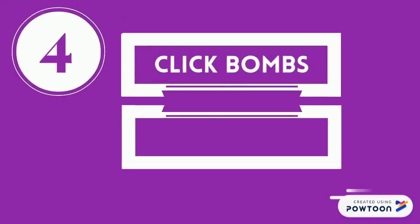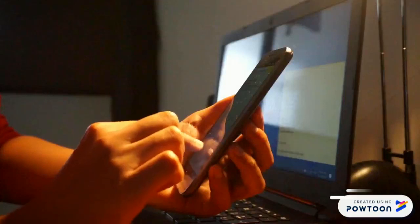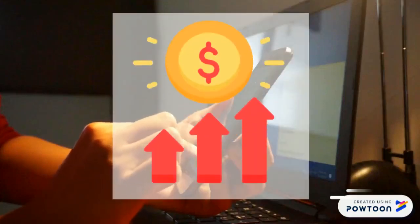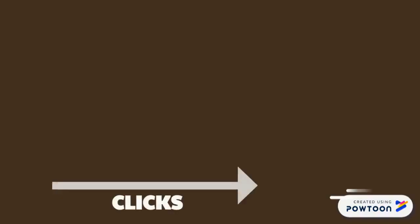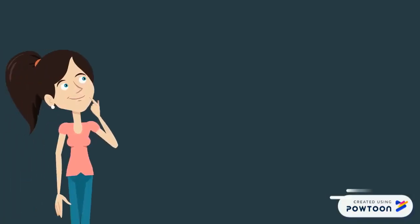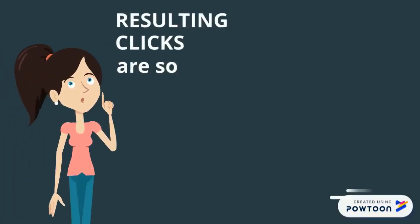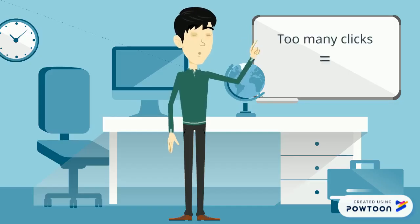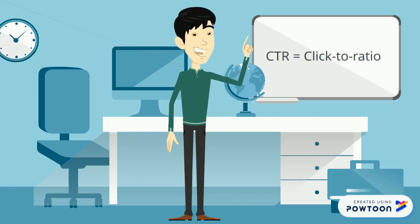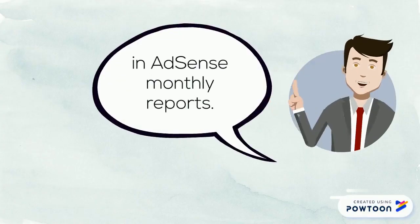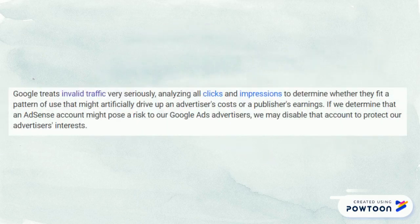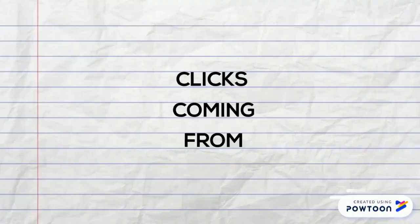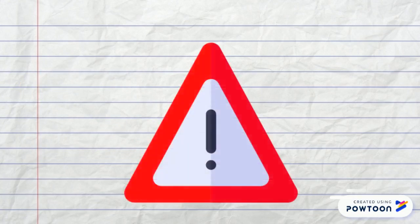The fourth reason is click bombs from competitors. As a publisher, you want a large income from your application — the more clicks, the greater your income. But if the resulting clicks are so large that they look unnatural, this is a problem. Ads that are clicked too much will produce a very large click-through ratio, which is not good for calculations in AdSense monthly reports. You may receive an invalid activity flag from Google at the end of the month. If you notice a lot of clicks suddenly coming from developing countries such as India or Bangladesh, you might have a problem.